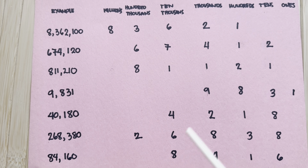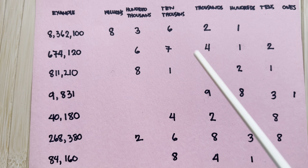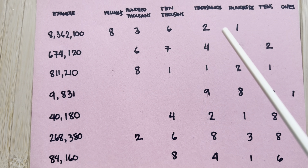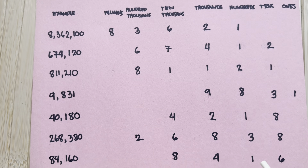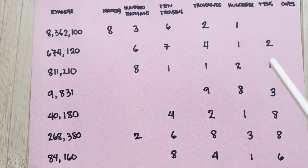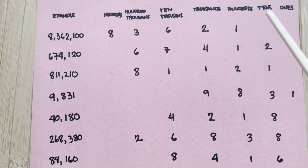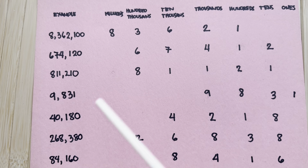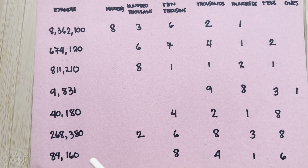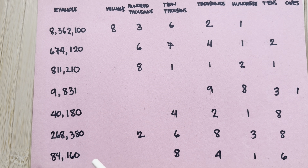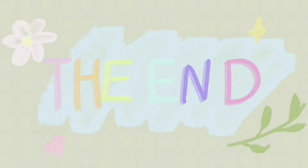Eight ten-thousands plus four thousands plus one hundred plus six tens is equal to eighty-four thousand one hundred and sixty. The end.